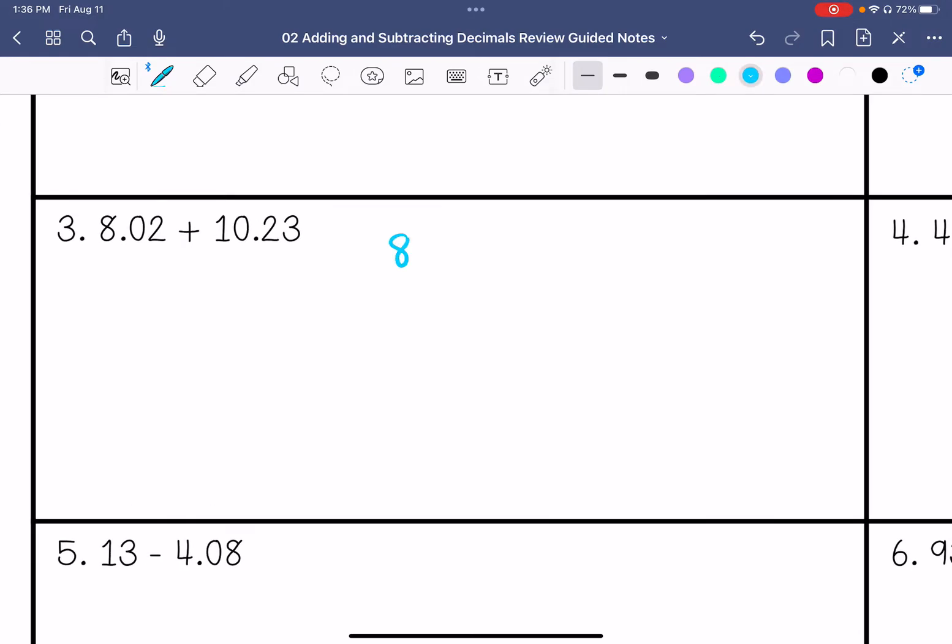Number three, we're going to do 8.02 plus 10.23. You can put a placeholder here, but you don't have to if it's to the left. 3 plus 2 is 5, 2 plus 0 is 2, 8 plus 0 is 8, and then 1 plus 0 is 1. Bring our decimal straight down. It's going to be 18.25.